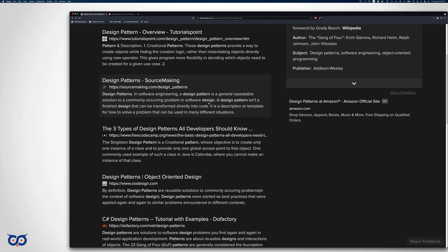A design pattern isn't a finished design that can be transformed directly into code. It's a description or template for how to solve a problem that can be used in many different situations. The crux is: a design pattern is a general repeatable solution to a commonly occurring problem. It doesn't mean it's the only one or the best one.